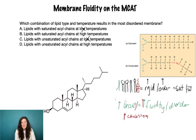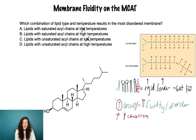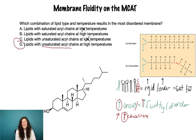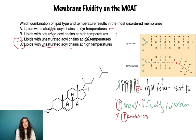Going back to our question: we're looking for the most disordered or most fluid membrane. Based on what we've covered, that would mean the most unsaturated fats or most cholesterol. Since the answer choices don't include cholesterol, we focus on unsaturated acyl chains at high temperature — answer D. Saturated fats increase order, so the most ordered membrane would be the opposite: the most saturated at low temperatures.